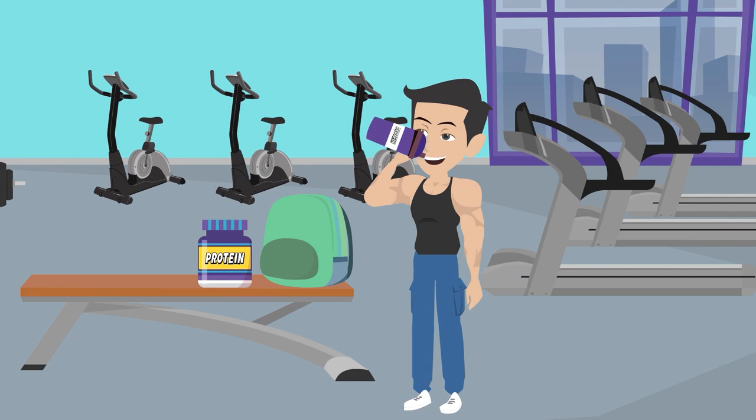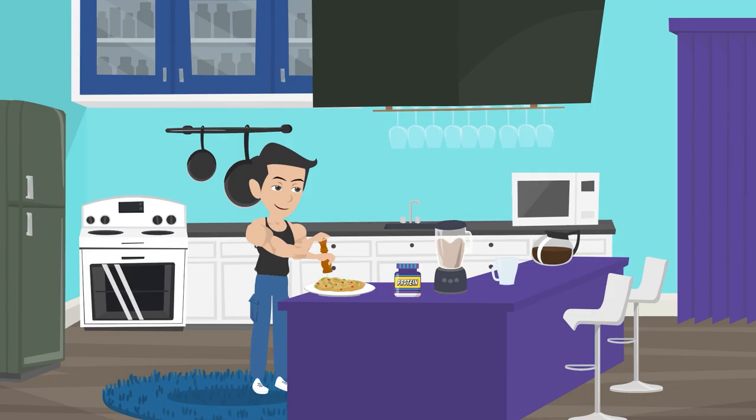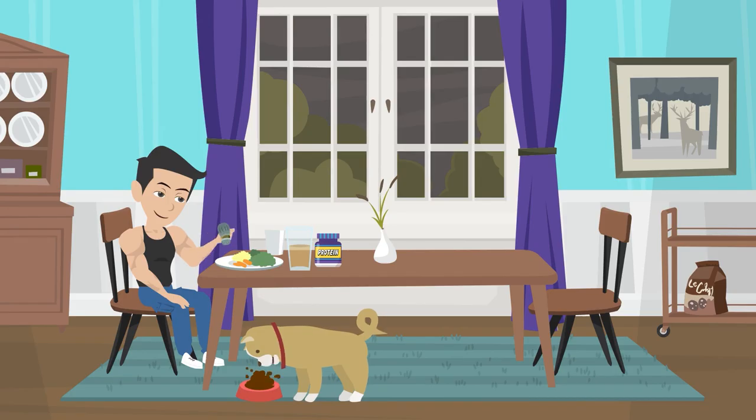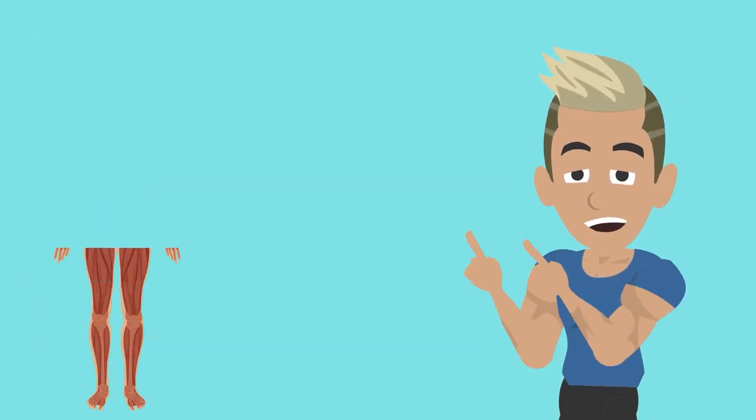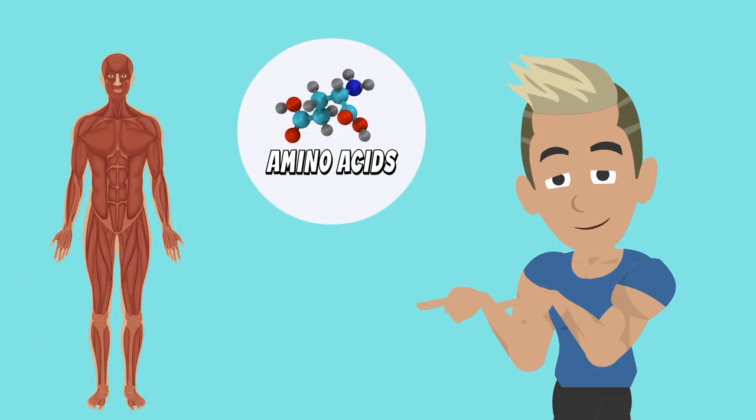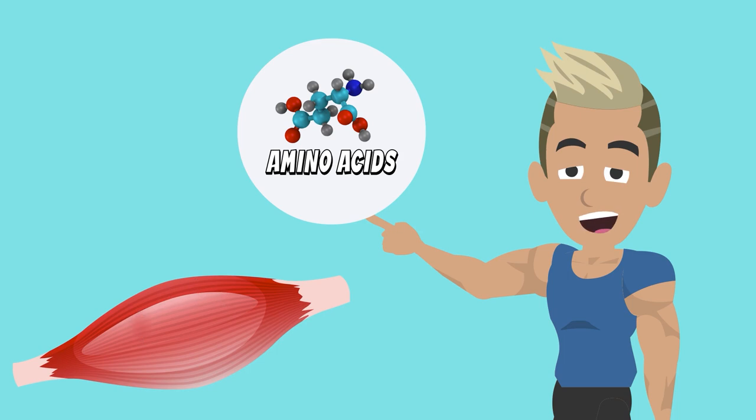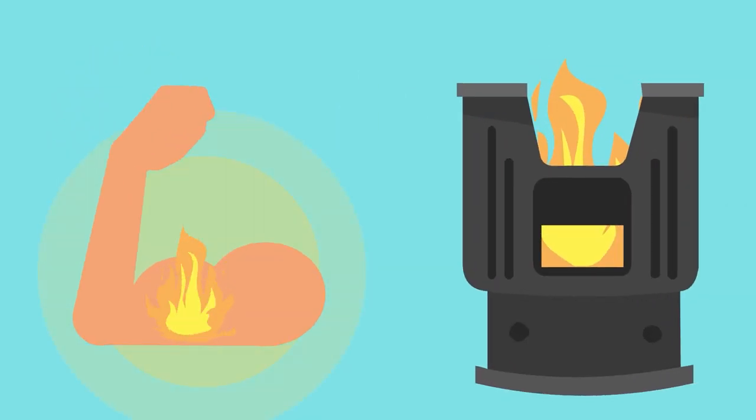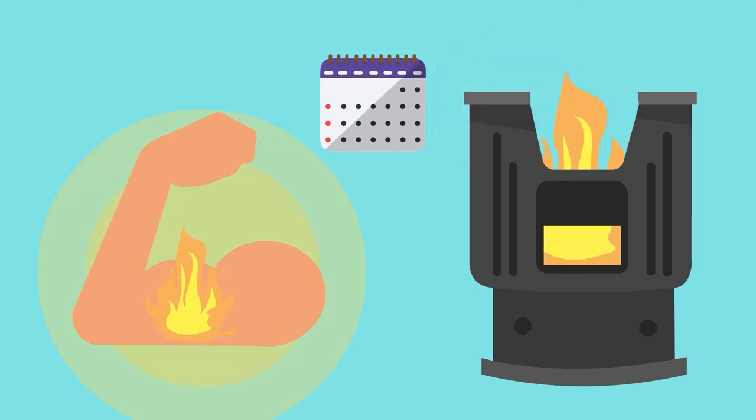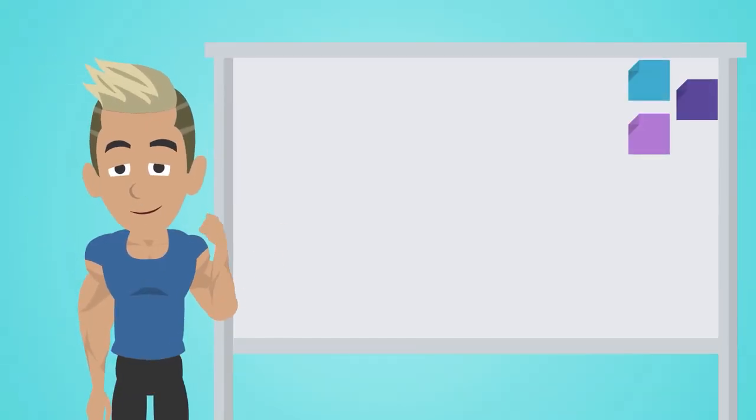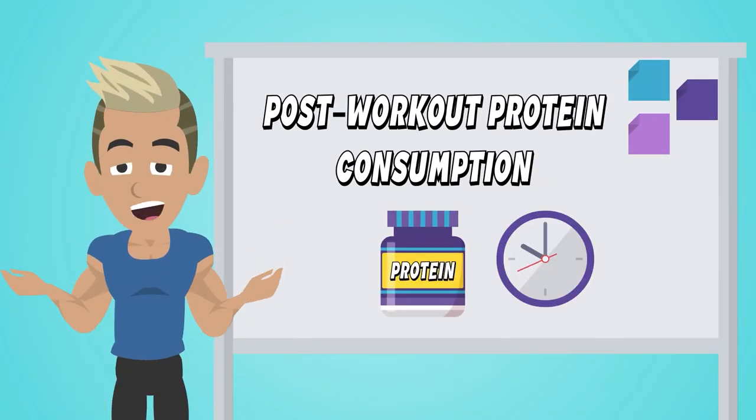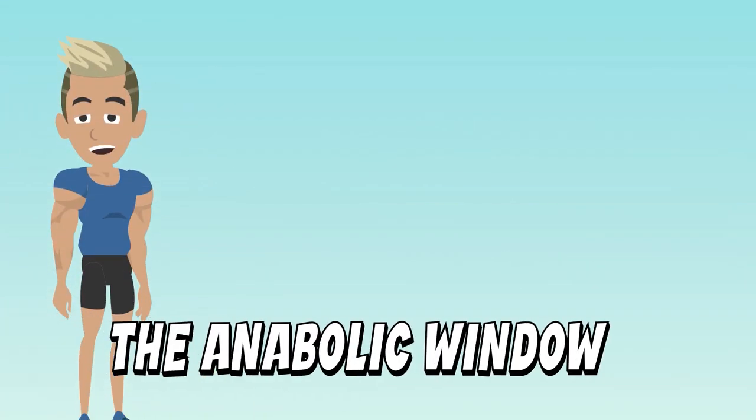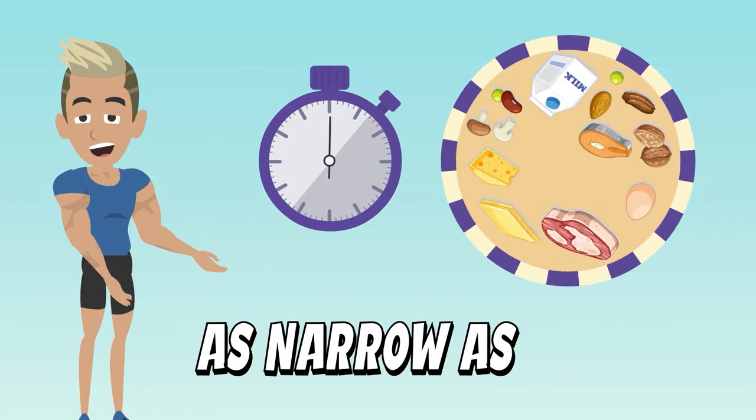Instead of cramming all your protein into one massive meal, try to distribute it evenly across all your meals. By doing this, you're giving your body a steady supply of amino acids to support muscle repair and growth throughout the entire day. It's like keeping the muscle building furnace burning all day long.